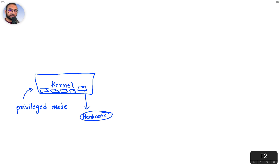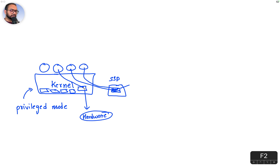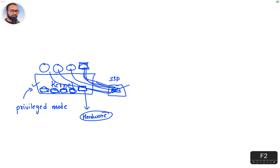The second reason is we would like multiple applications to share hardware. For example, let's say we have a solid state drive with a partition and various files on it. Different applications want to access different files, so all of them are essentially wanting to access the SSD as hardware. We wouldn't want one application to own the SSD or mess around with it however it wants — we'd want somebody to provide a very nice, serialized, and managed access to it. So that's one of the reasons the kernel, running in privileged mode, has access to the hardware.